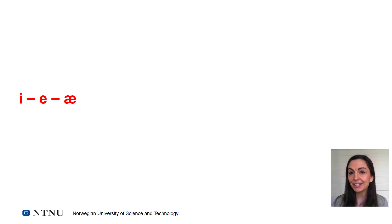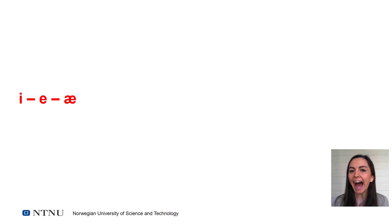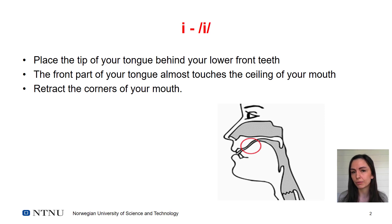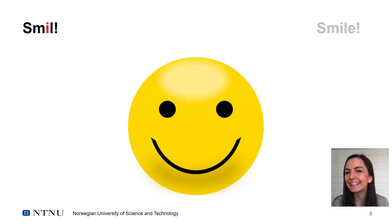In this video, we will focus on the vowels i, e, and ä. We start with i. Place the tip of your tongue behind your lower front teeth. The front of your tongue almost touches the ceiling of your mouth. Retract the corners of your mouth lastly — smile. i.